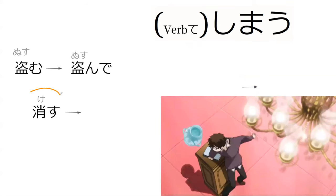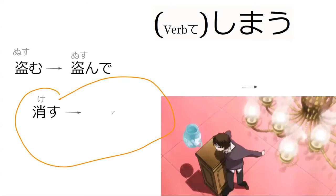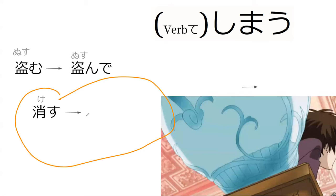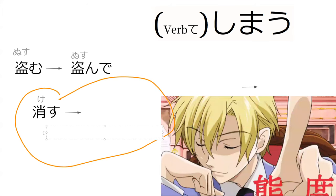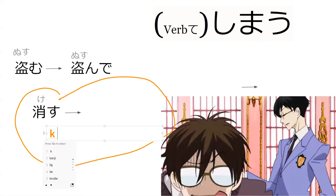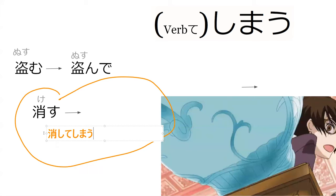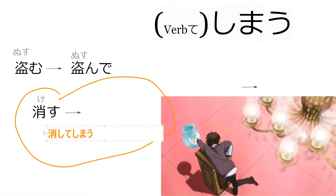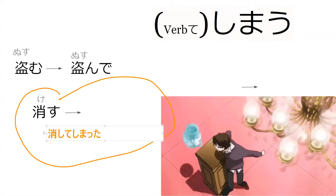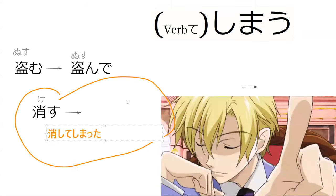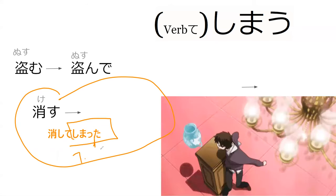How would you say 'oh no, I will disappear it'? 消してしまう — exactly. This basically means 'will be disappearing and oh no when that happens.' If you want to specifically mention it already occurred, you'd use past tense. Whatever verb is the final verb in a sequence is the one that tells you what tense the sentence is in.